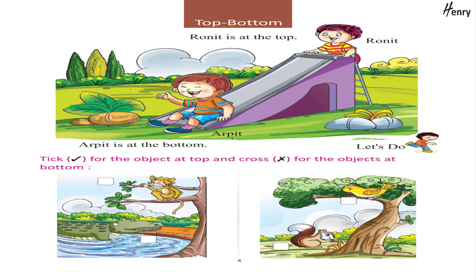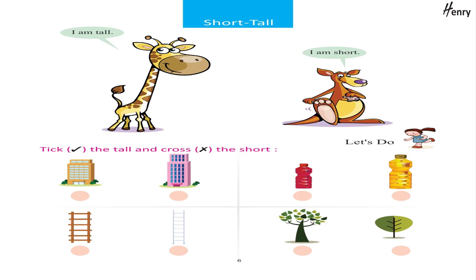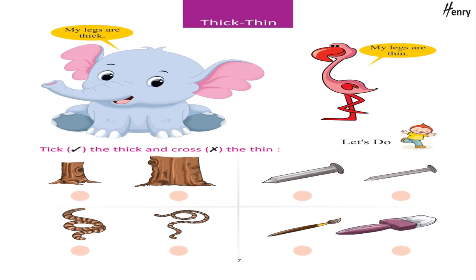Big, small — I am big, I am small. Let's do: tick the big and cross the small. Tall, short — I am tall, I am short. Let's do: tick the tall and cross the short. Thick, thin — my legs are thick, my legs are thin.